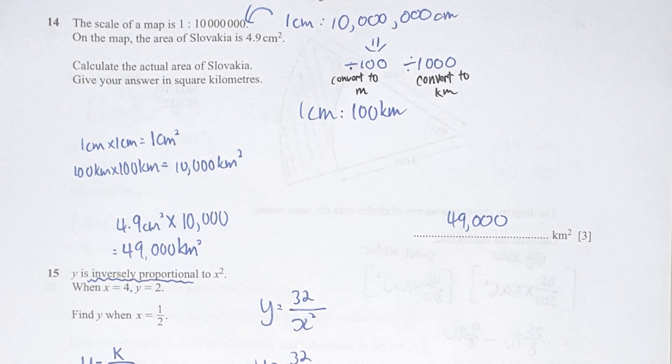As for question 14, things to take note is the scale there. So 1 to 10 million cm. So to convert into kilometers, I first divide it by 100 followed by 1000. So you will identify that 1 cm is equivalent to 100 kilometers. On the map, the area of Slovakia is 4.9 cm square. So 1 cm times 1 cm, you will get 1 cm square. So 100 km times 100 km, you will get 10,000 kilometer square. So 4.9 times 10,000, you should get the actual area based on the scale as 49,000 km square.